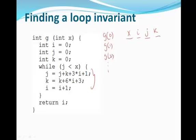We know that x is a loop invariant because x never changes inside the loop. Let's start with x equal to 0. Initially, i, j, and k are all zeros. When we go into the loop, j changes to j plus k plus 3i plus 1. Since j, k, and i are all 0, j will become 1 in the first iteration. k will become k plus 6i plus 3 — since k and i are 0, k becomes 3. And i is incremented to 1.